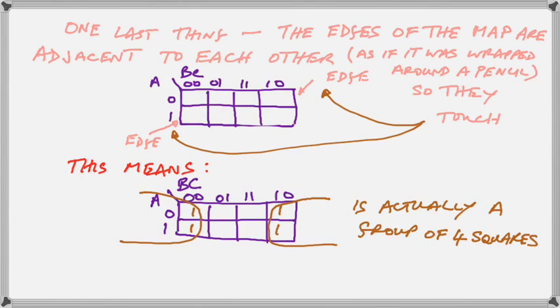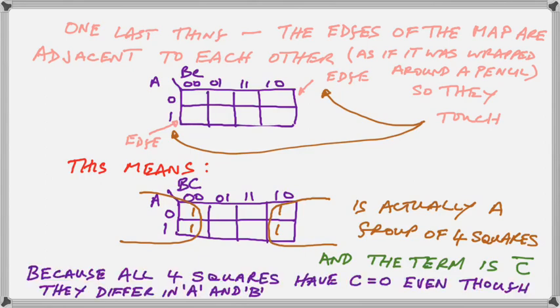This means that if you have ones at the edges, this is actually a group of four squares. And in this case, the term is actually C-bar. Because all four squares have C equal to zero, even though they differ in A and B. Check it out for yourself in the map above.